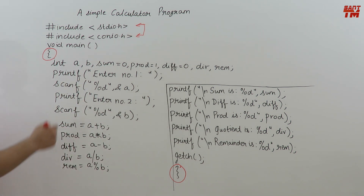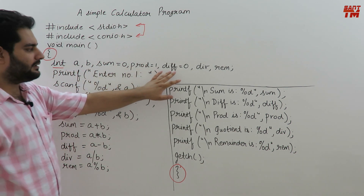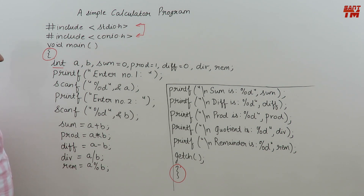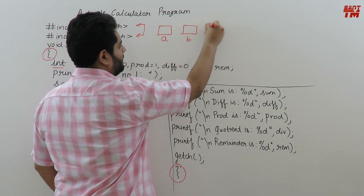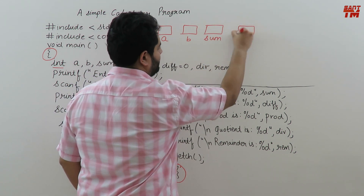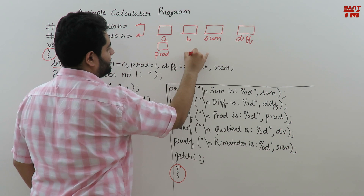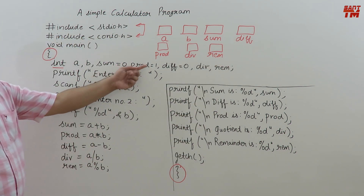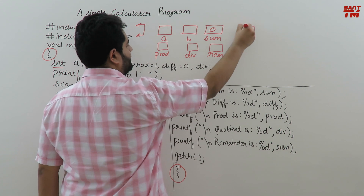In this statement I have declared integers. Integer declarations are made using int: a, b, sum equals zero, product equals one, difference equals zero, division, and remainder. After this int statement, memory for a, b, sum, difference, product, division, and remainder will each be created in RAM. Note that sum is initialized to 0, product to 1, and difference to 0.